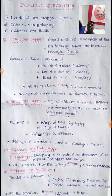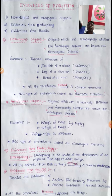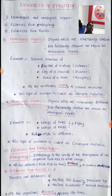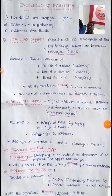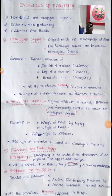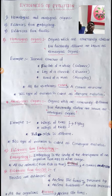Next are analogous organs. Organs which are structurally different but functionally similar are known as analogous organs. Examples of these organs are wings of a bat and wings of birds. They are structurally different but their function is the same.